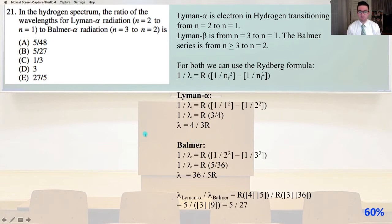For the Balmer series, 1 over lambda equals r times the quantity 1 over 2 squared minus the quantity 1 over 3 squared. So 1 over lambda equals r times 5 over 36, and lambda equals 36 over 5r.